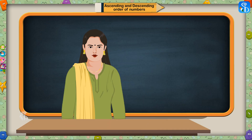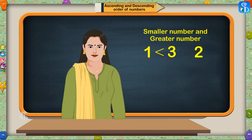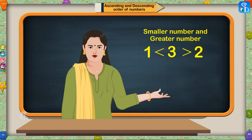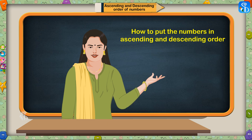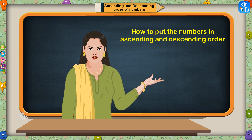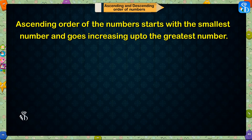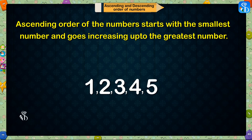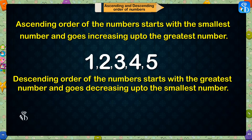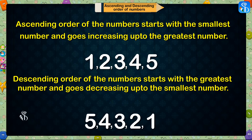Children, so far we have learnt to identify the smaller number and the greater number. Today we are going to learn how to put the numbers in ascending and descending order. Ascending order of the number starts with the smallest number and goes increasing up to the greatest number. Descending order of the number starts with the greatest number and goes decreasing up to the smallest number.